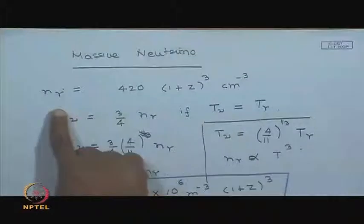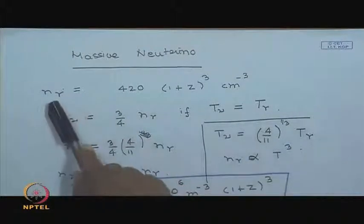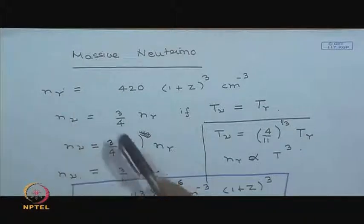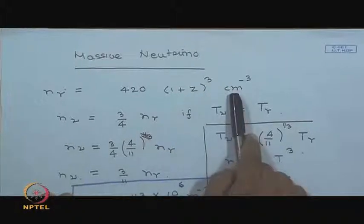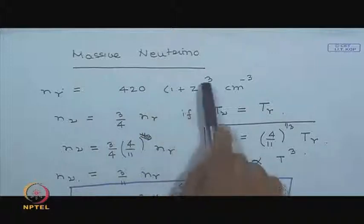Good morning and welcome to today's lecture. We have been discussing the thermal history of the universe, and at the end of the last class we were discussing the possibility of the neutrino having a mass. Let us resume that discussion. We started off by noting the fact that the photon number density in the universe is 420 photons per centimeter cube at present, and the number density scales as (1+z)³.